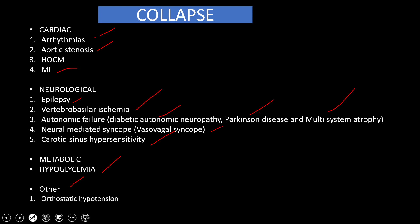In metabolic causes we have hypoglycemia leading to collapse. Other causes include orthostatic hypotension due to diuretics, dehydration, or hemorrhage, and hyperventilation syndrome in which the patient hyperventilates because of anxiety or a panic attack, leading to collapse.